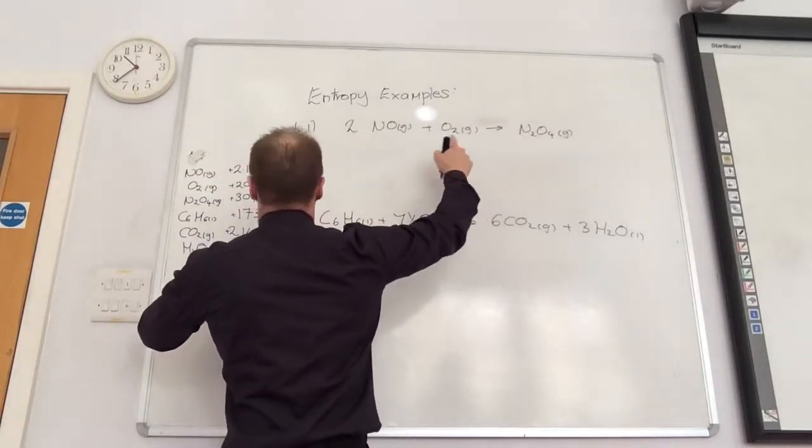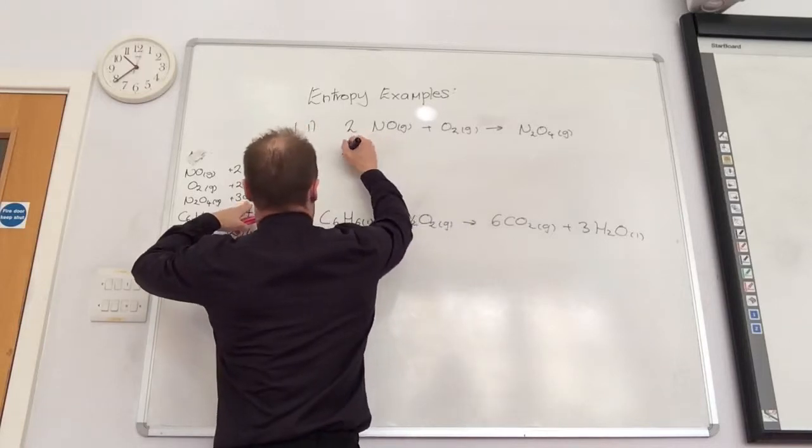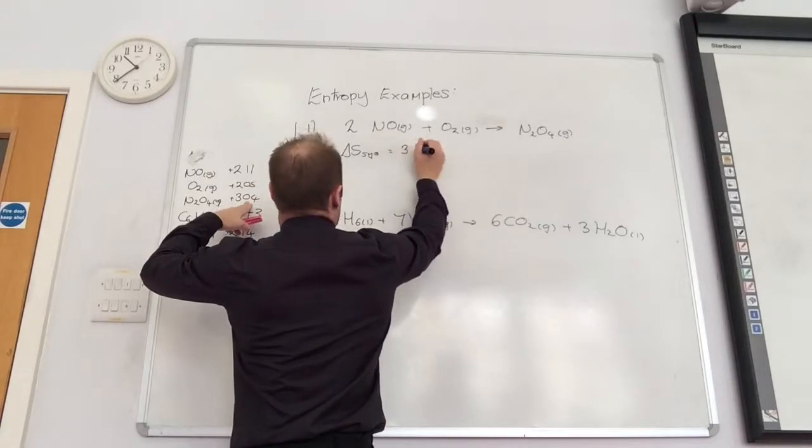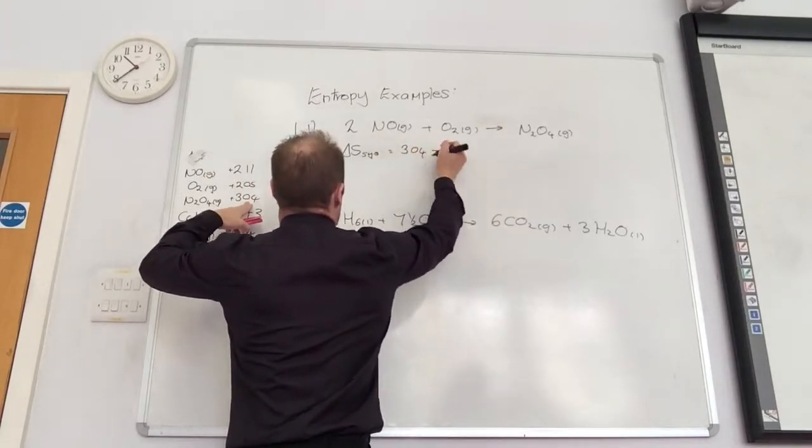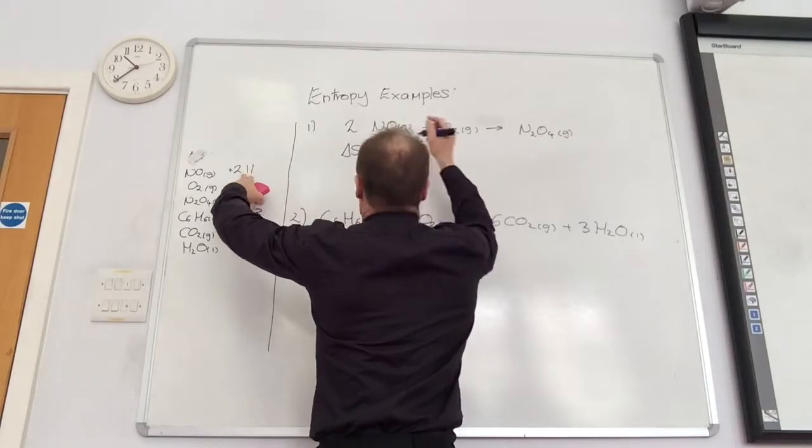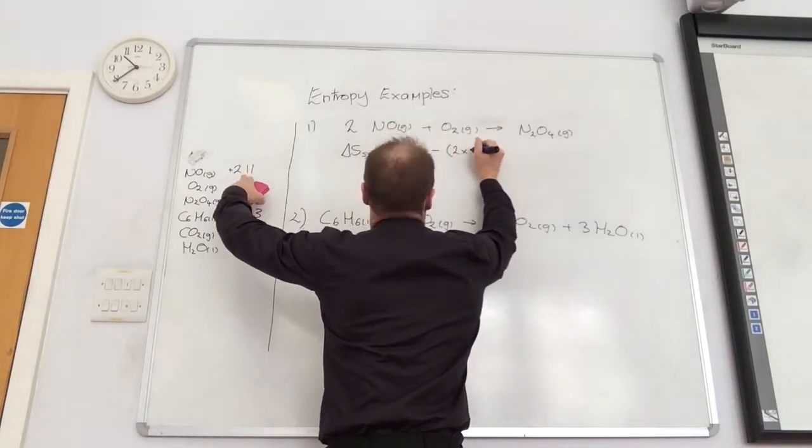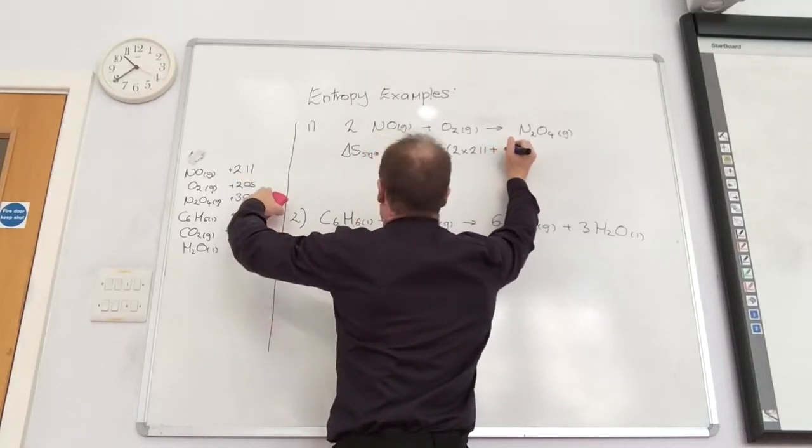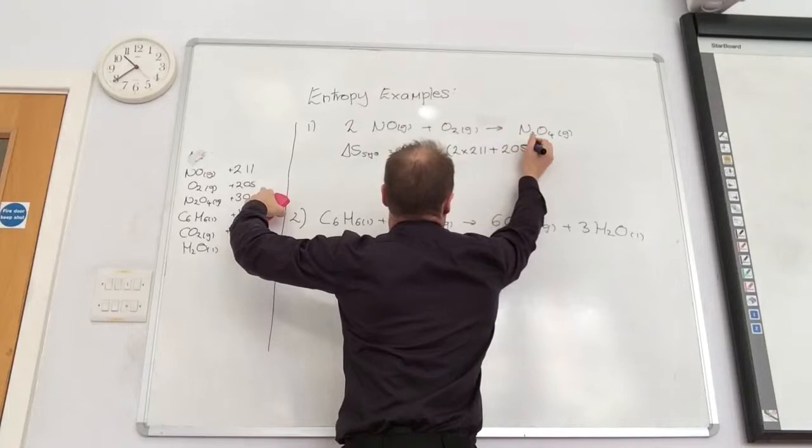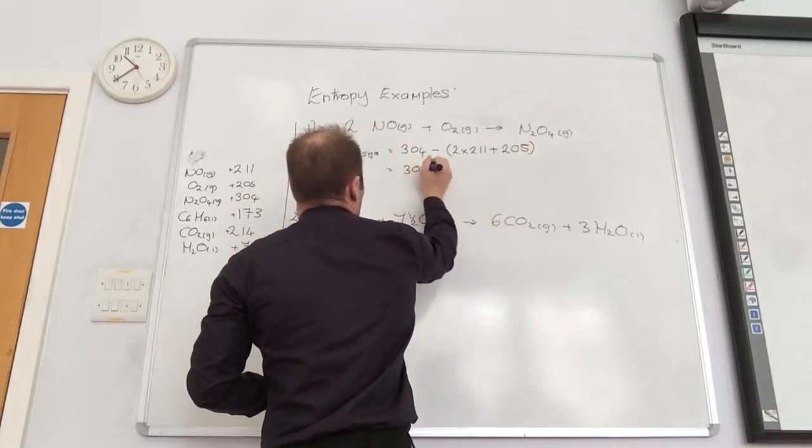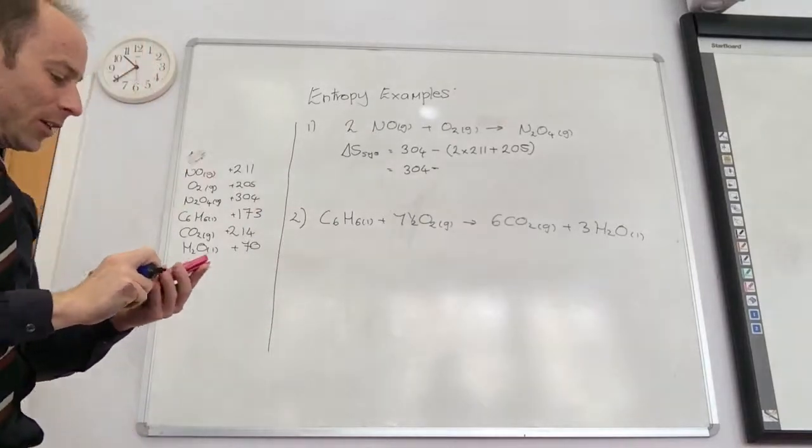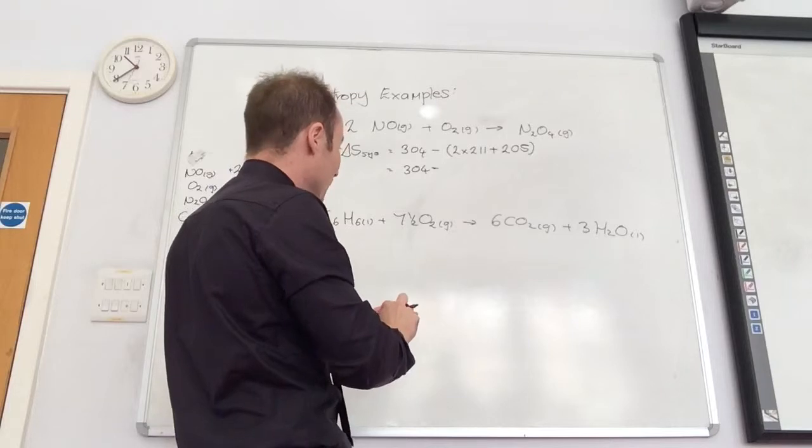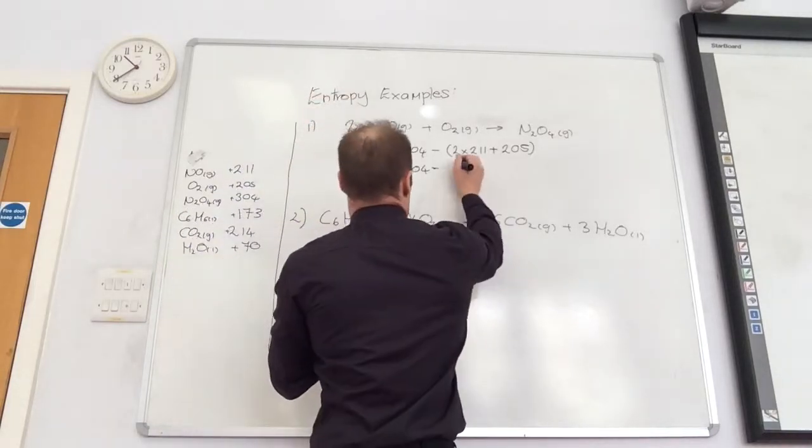So delta S for the system is going to equal 304 minus, now I've got two of those, so it's minus, and I'm going to put this in brackets, it's two times 211 plus oxygen, which is 205. So I've got 304. What do we reckon that's going to be if we work out the brackets? It's going to be 422 plus 205, which is minus 627.